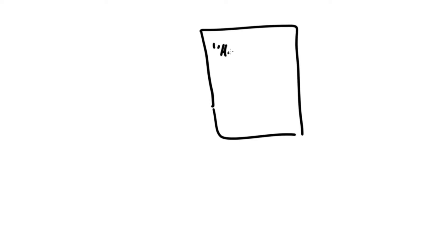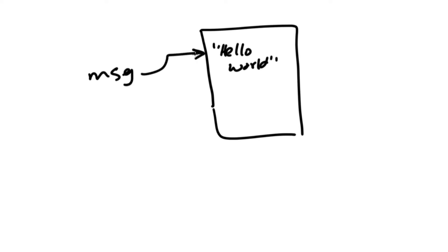Let's try to visualize how variables work. You can think of the value as some data stored in memory, and then the variable name message will be pointing to this value. So when you write message is equal to Hello World, you have message as a name pointing to the value Hello World in memory.